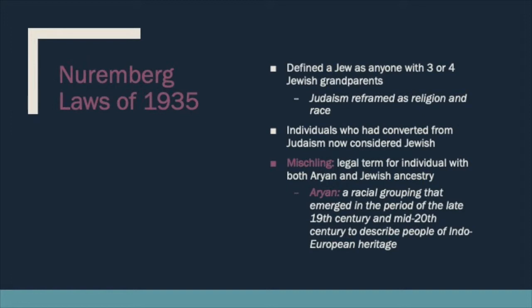The Nuremberg Laws define a Jew as anyone with three or four Jewish grandparents. This begins to reframe Judaism as not only a religion, but also as a race. By saying if you had Jewish grandparents you were considered Jewish, it enlarges the Jewish population — because it includes individuals who had converted away from the faith. There were even priests and nuns who had taken vows upholding Roman Catholicism who were now considered Jewish because their grandparents had been Jewish.